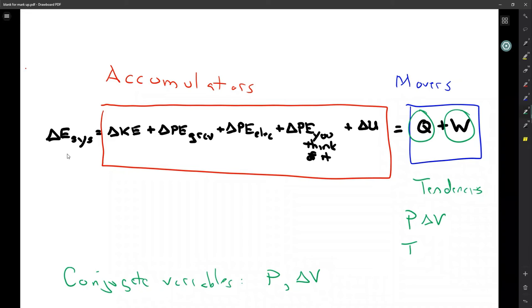Other conjugate variables are things like stress, strain, any force acting through a distance, or as we'll see later, a temperature and change in entropy.